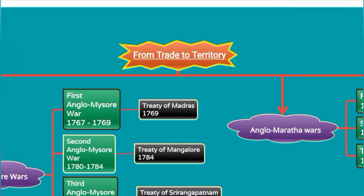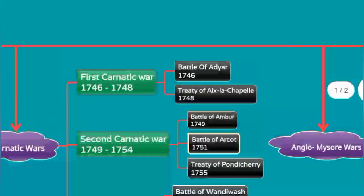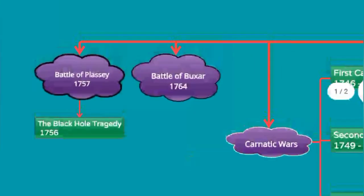Greetings everyone, welcome to our channel Student Station. If you haven't subscribed to our channel, please subscribe. This video covers 8th standard social science history, Unit 2: From Trade to Territory. We'll be looking at a mind map covering the first Battle of Plassey and political powers by the English East India Company.